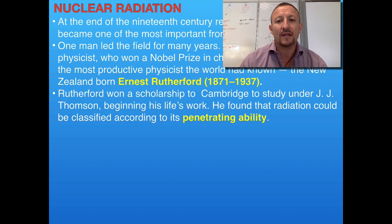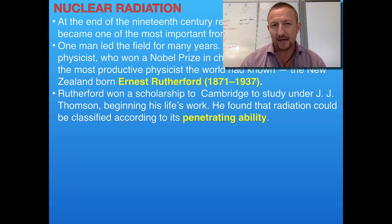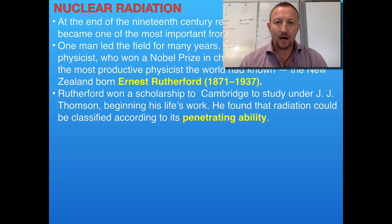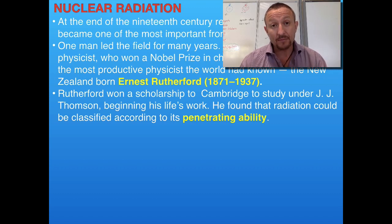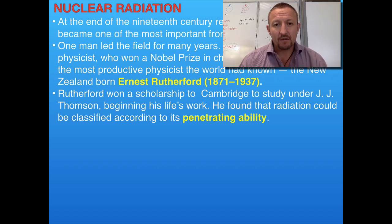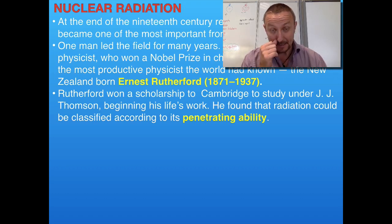He was doing the gold leaf experiment to prove J.J. Thomson's model of the plum pudding idea — the idea that each atom was positive and had these negative particles engaged inside. In that model, those negative charges were randomly placed. He actually used alpha particles, and what we'd like to do is just recap on the properties of these alpha particles, these beta particles, and these gamma particles.